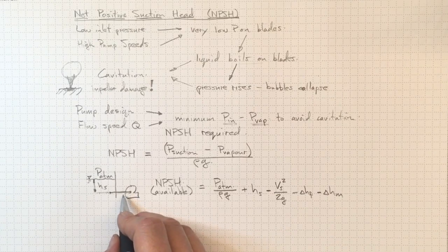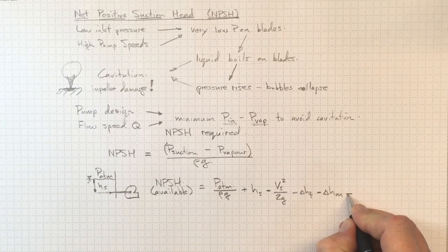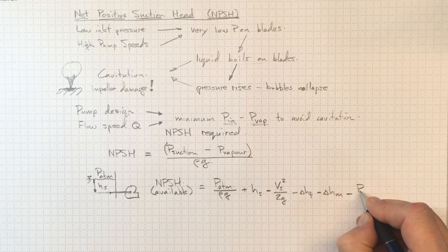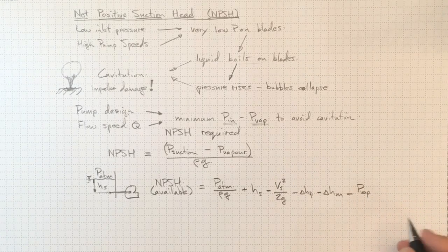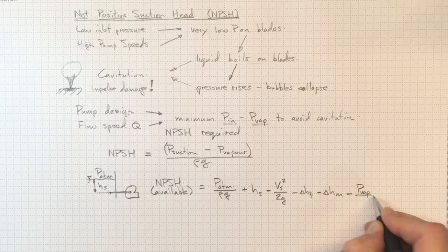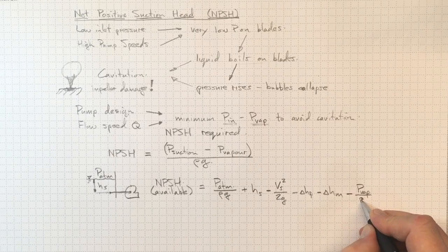This entrance loss, and if we had any elbows in here, we'd have to account for that. Then minus the vapor pressure of the fluid at the current temperature of that liquid divided by rho g.